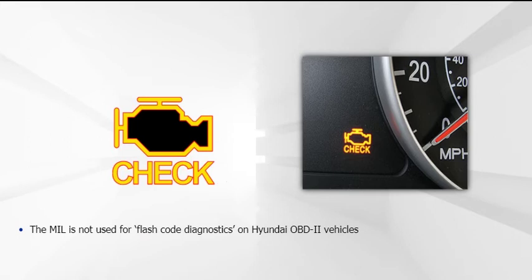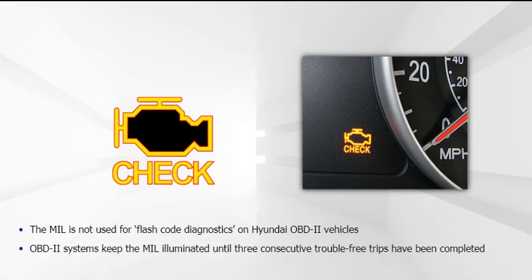This is why a scan tool is necessary for retrieving OBD-2 trouble codes. The MIL will stay illuminated on an OBD-2 system until the vehicle completes three consecutive trips without the PCM recognizing a repeat failure. For severe system malfunctions, including misfires and fuel trim problems, the MIL will stay illuminated until the vehicle is operated for three consecutive trouble-free trips under conditions similar to those that existed during the initial failure.